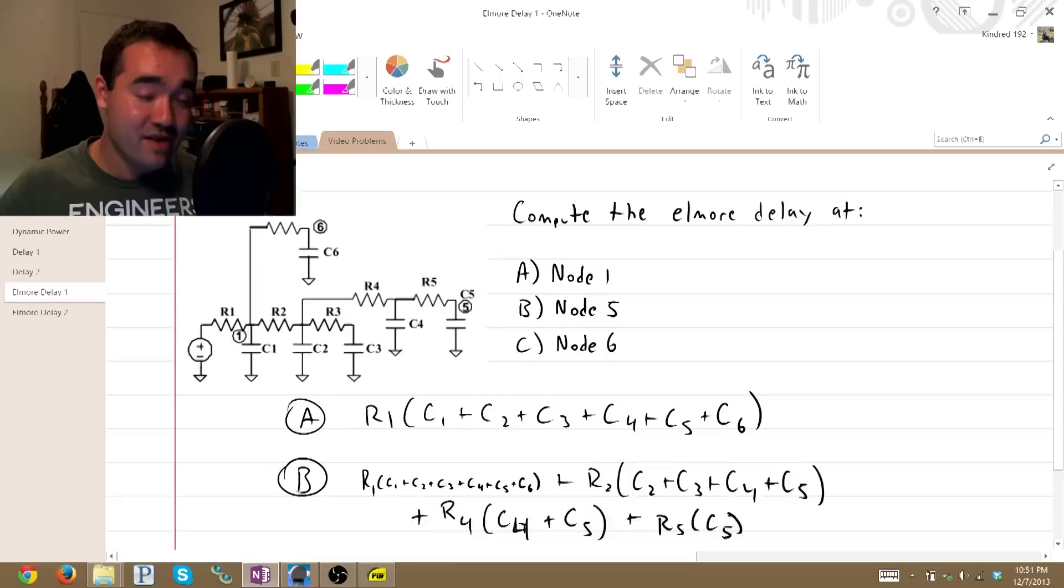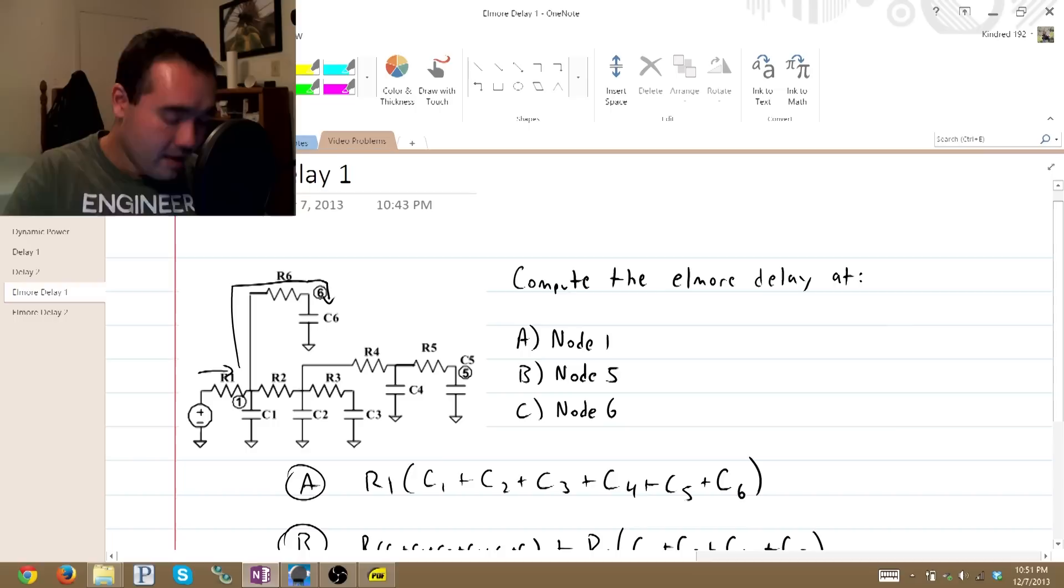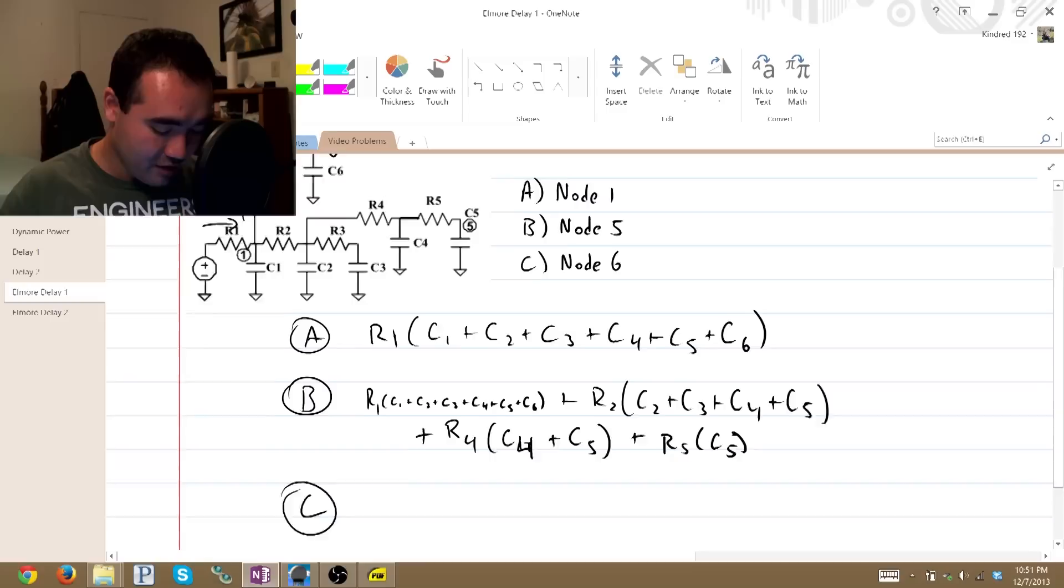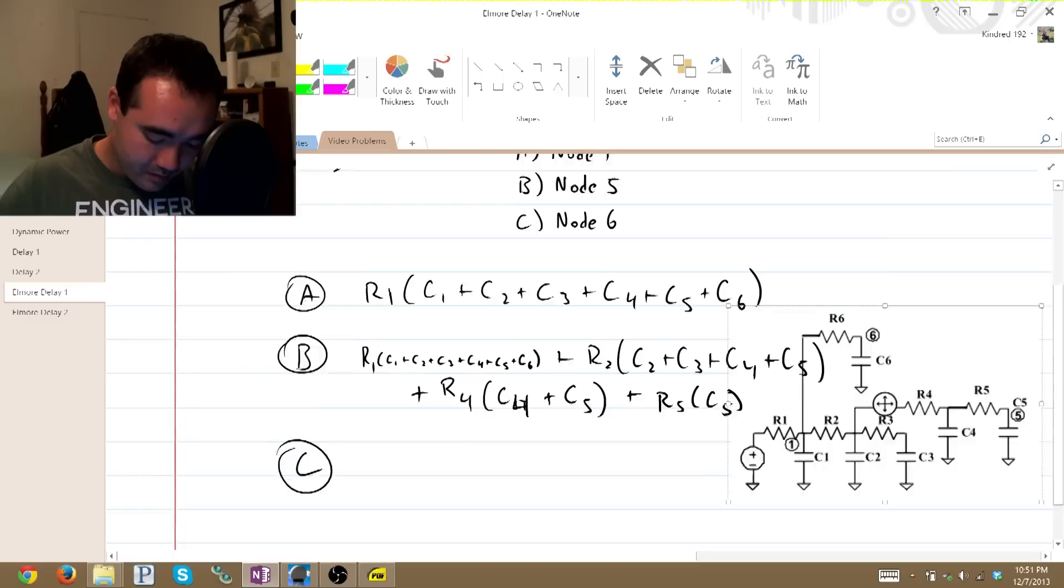So let's do C. Now, just like with A and B, this is our propagation path from the input to 6. We're only looking at two resistors. So our answer to C, and you know what, I'm just going to move this over here.